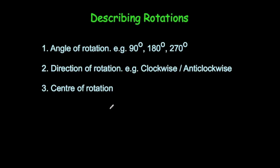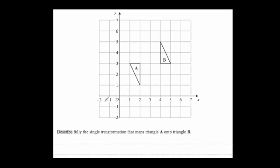Let's have a look at some typical questions. It says: describe fully the single transformation that maps triangle A onto triangle B. First of all, you can see it's a rotation because the object has been rotated. So you're just going to state first of all: a rotation of...